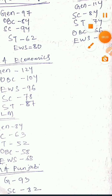Next is MSc Physics — Computational Physics, not normal physics. For General it is 255, OBC is 167, SC is 179, EWS is 180. Next, moving to other subjects — MSc Life Science Bioinformatics.